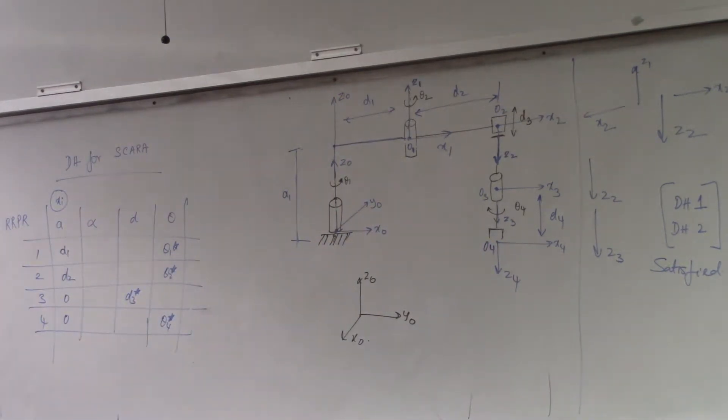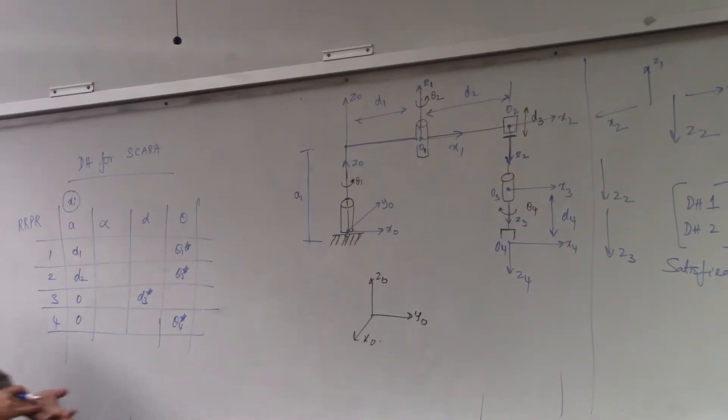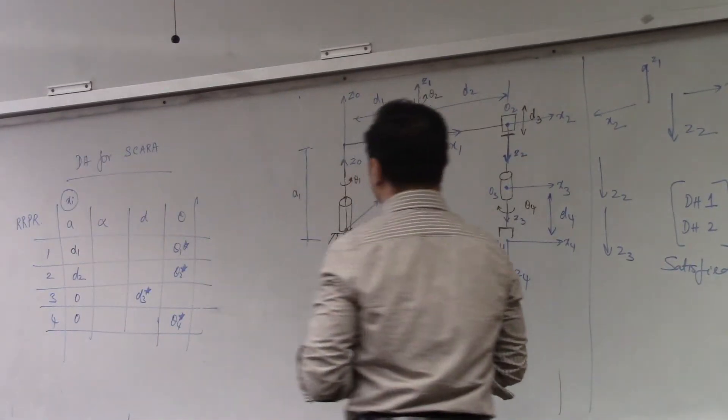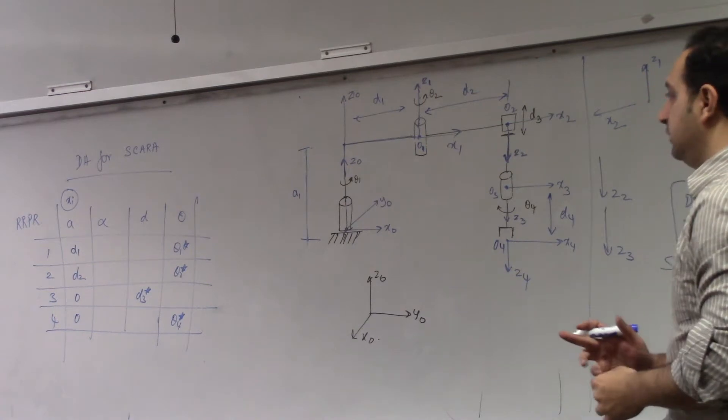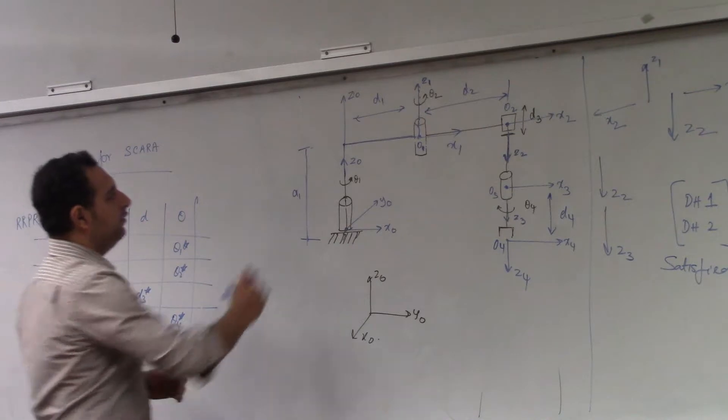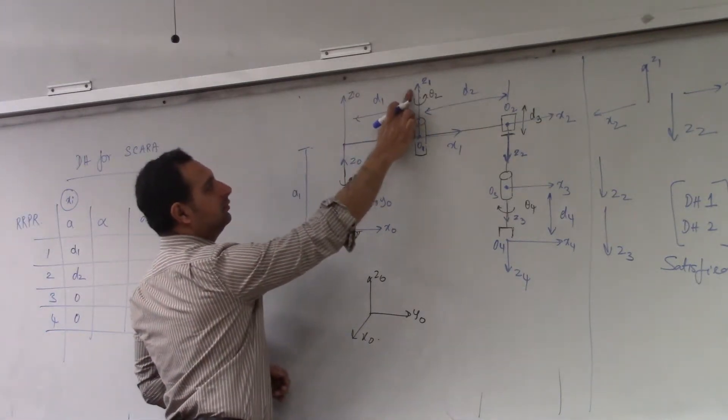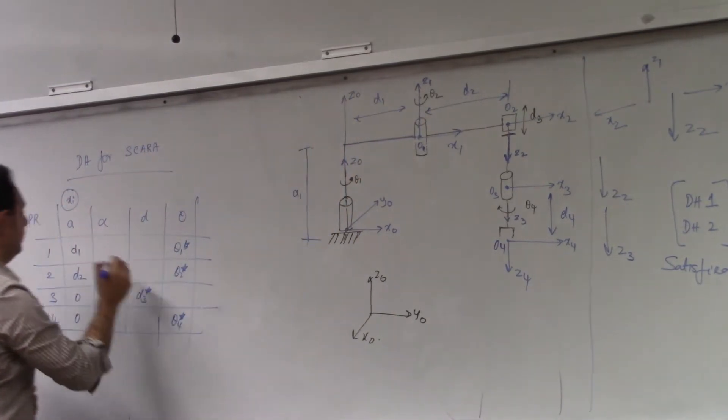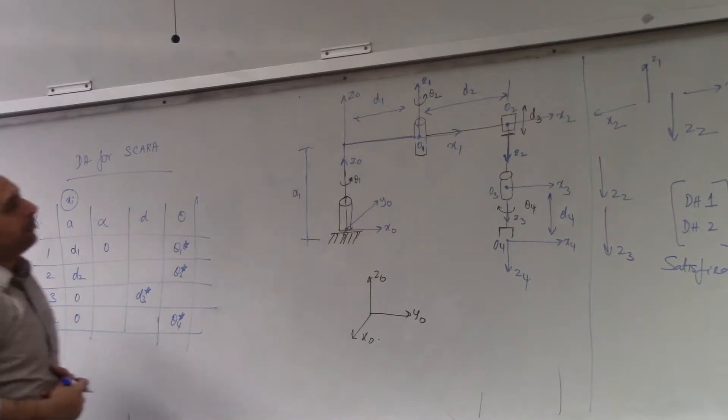Alright. Let's do alpha. Alpha is the angle between the two Z axis measured along the XI axis. So here, what is the angle between Z0 and Z1? They are both parallel, so this is going to be zero.